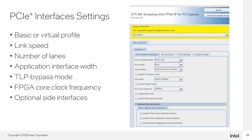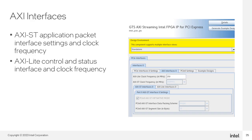You can select Gen 3 or Gen 4 as the hard IP speed, the number of lanes in your link, and the width of the application interface. You can enable TLP Bypass here to connect your own application layer to support features not native to the IP. You can choose the frequency of the clock presented by the IP to the FPGA fabric for clocking the application. You can also enable optional side interfaces such as the completion timeout interface and the configuration timeout intercept interface. The AXI Interfaces tab provides options for the AXI interfaces to the application logic, including the AXI Streaming Interface for transmitting and receiving TLPs and the AXI Light Interface for access to the CSRs.